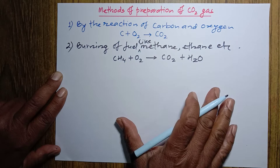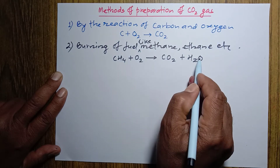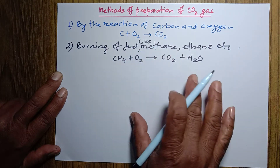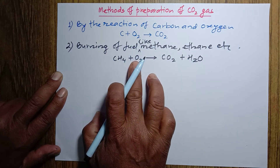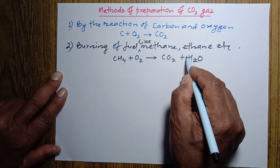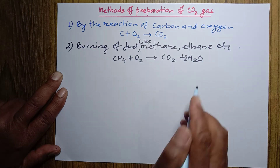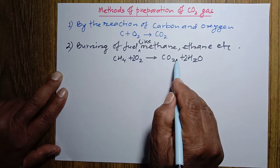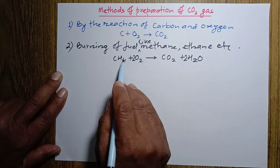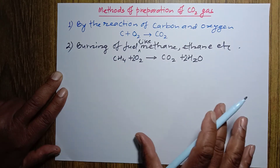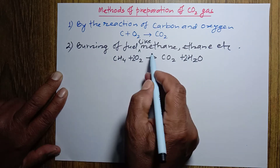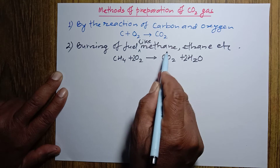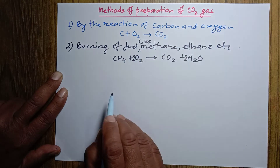Now how to balance this equation? On the right-hand side we have 3 oxygen, and on the left-hand side we have 2. Since one side is odd and the other even, we take 2 here and 2 here to get 4. This way oxygen is balanced, hydrogen is also balanced, and carbon is also balanced. This is the balanced reaction of methane with oxygen — when methane burns in air.